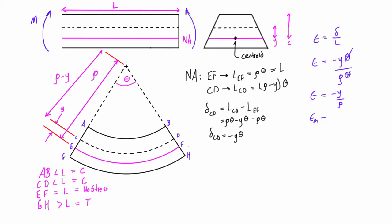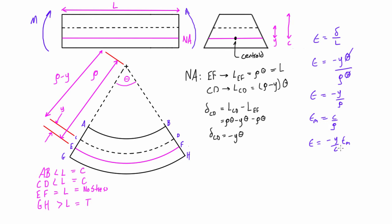If we maximize this, the maximum strain is c over ρ, where c is the distance from the neutral axis to the outermost fiber. We can distinguish maximum compressive and maximum tensile strains by noting which c applies on each side. We can also write that the strain at any point equals negative y over c times the maximum strain — a linear relationship we've seen in previous axial strain videos.